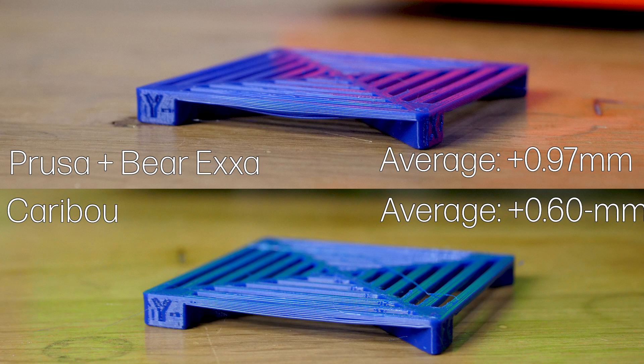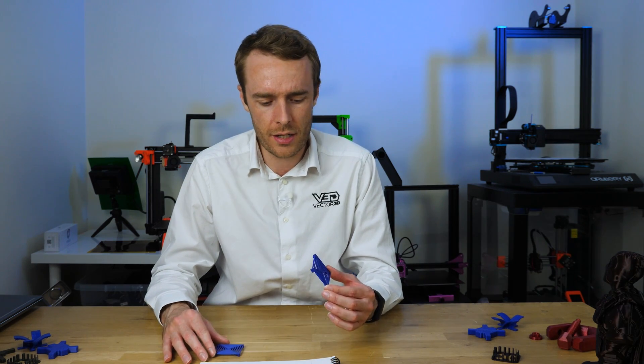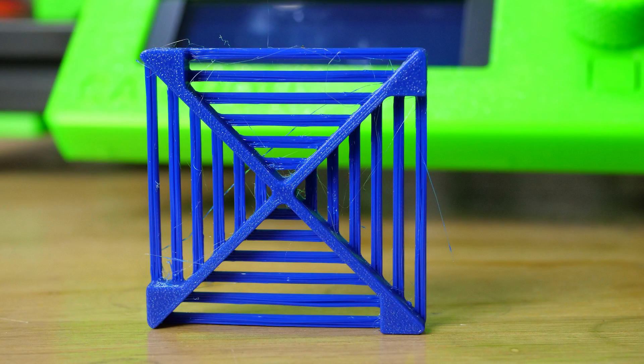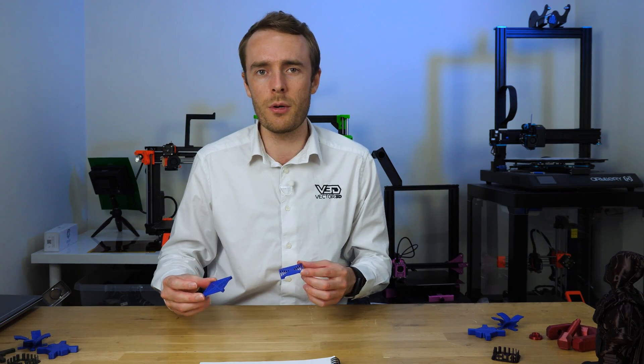So overall the average error for the Prusa was 0.97 millimeters while the average error for the Caribou printer was 0.6 millimeters. So that makes the Caribou about 34% less than the Prusa. Now that one millimeter does sound quite significant but I have measured it at the absolute maximum on these 50mm bridge tests but it does give us a really good indication of the relative performance between the Caribou and the Prusa.